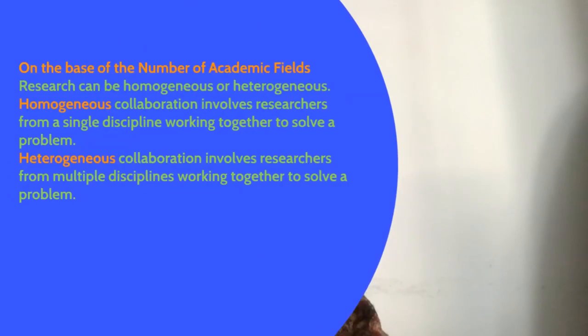Collaborative research differentiated on the basis of a number of academic fields can be homogeneous or heterogeneous. Homogeneous means that the collaboration involves researchers from a single discipline working together to solve a problem, or it can be heterogeneous, and in this case collaboration involves researchers from multiple disciplines working together to solve a bigger or more complex problem.